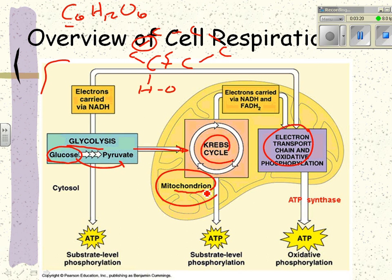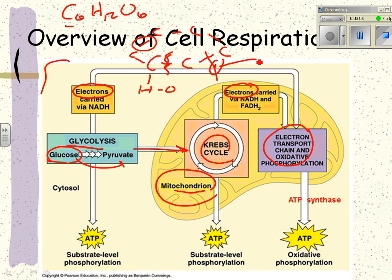Then it passes into the powerhouse of the cell — from 6th grade cell model building — the mitochondria, where electrons are carried. Electrons are carried because when you break a chemical bond, what's actually in a covalent bond is shared electrons. So when you break it apart, some of those electrons are going to be used, and when those electrons are used and carried, that is equal to energy.